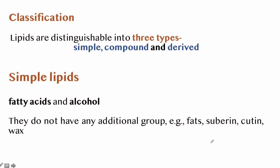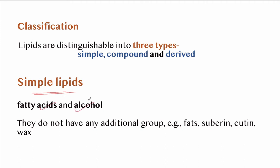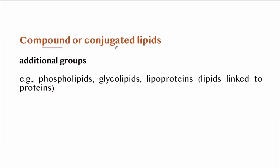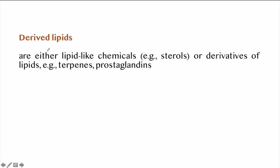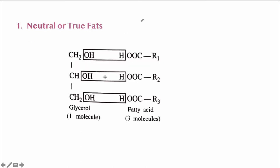Lipids can be distinguished into three types: simple, compound, and derived. Simple lipids are formed from fatty acids and alcohol, with no additional groups — examples are fats, suberine, cutin, and wax. Compound or conjugated lipids possess additional groups beside fatty acids and alcohol — examples include phospholipids, glycolipids, and lipoproteins (where lipids are linked to proteins). Derived lipids are either lipid-like chemicals such as sterols, or derived from lipids such as terpenes and prostaglandins.